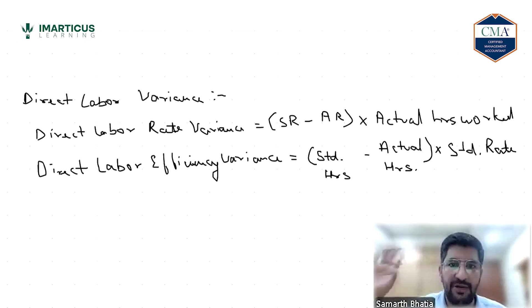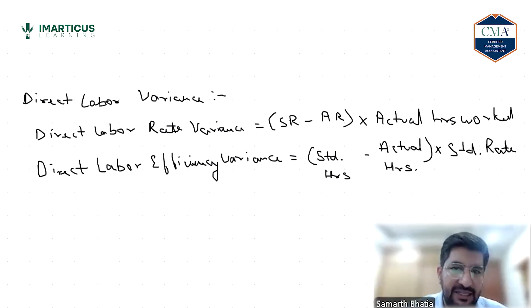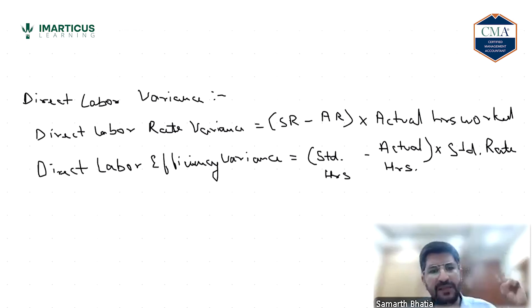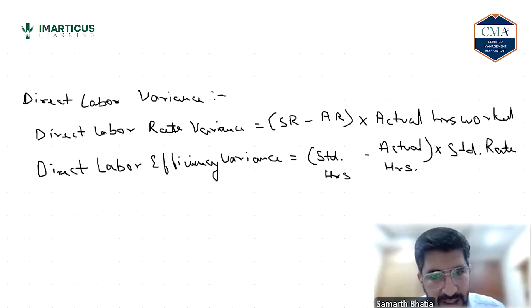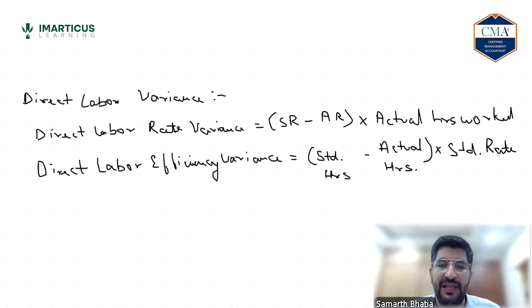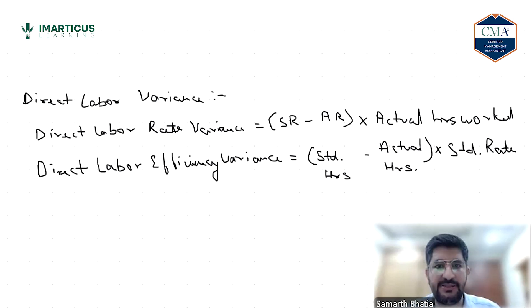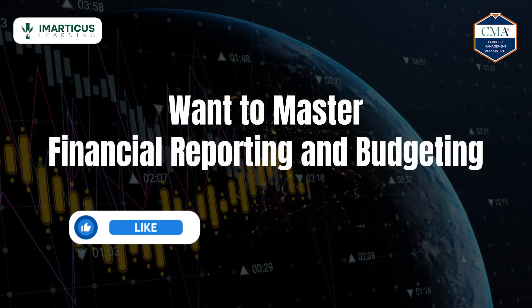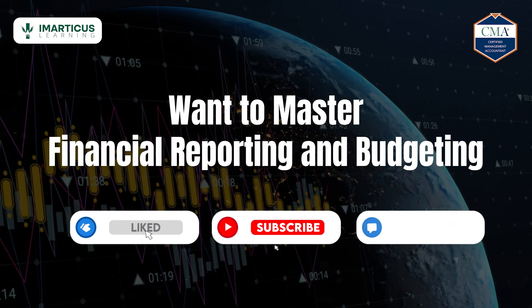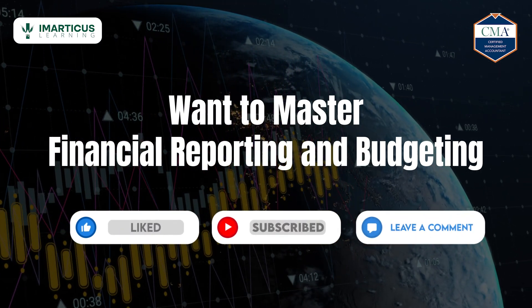Direct labor variances work exactly like direct material variances. These are the two major cost components we've discussed in this session. Thank you everyone for watching — hope you got the concepts. If you found this session valuable, hit the like button, subscribe to our channel, and tell us in the comments below what topic we should dive into next.